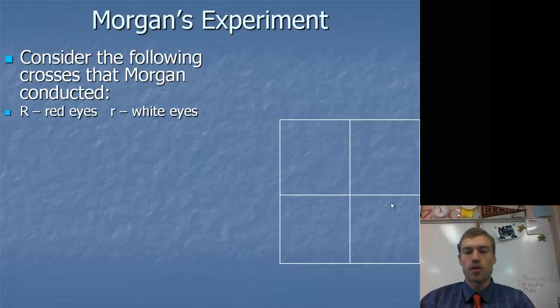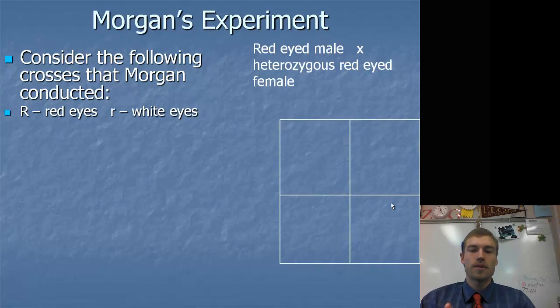Consider the crosses that Morgan conducted. What he did was that he crossed a red-eyed male with a heterozygous red-eyed female. This would be what you would get for that if you did out the Punnett square.